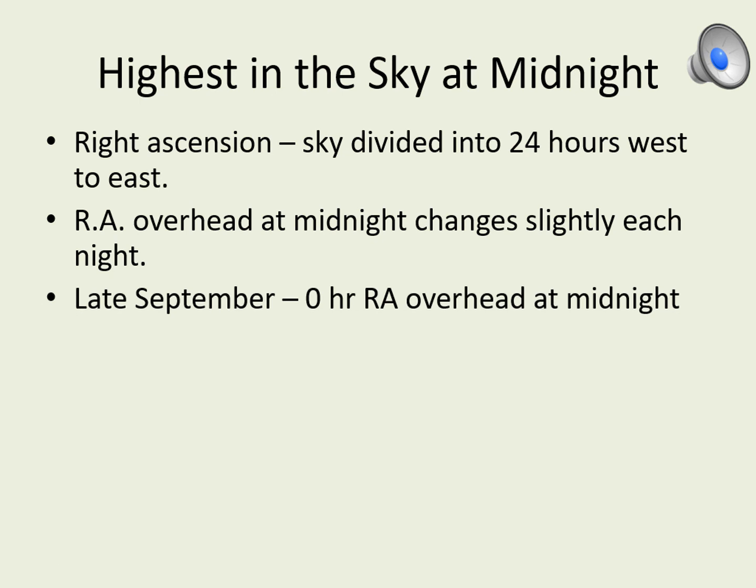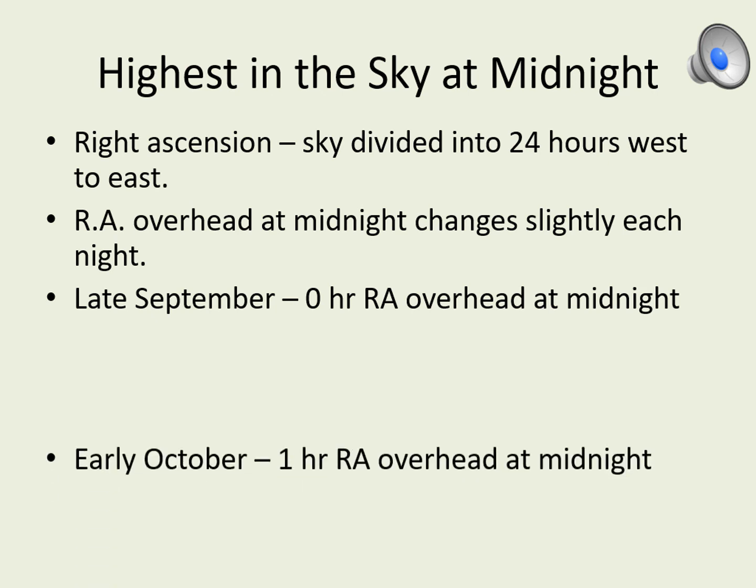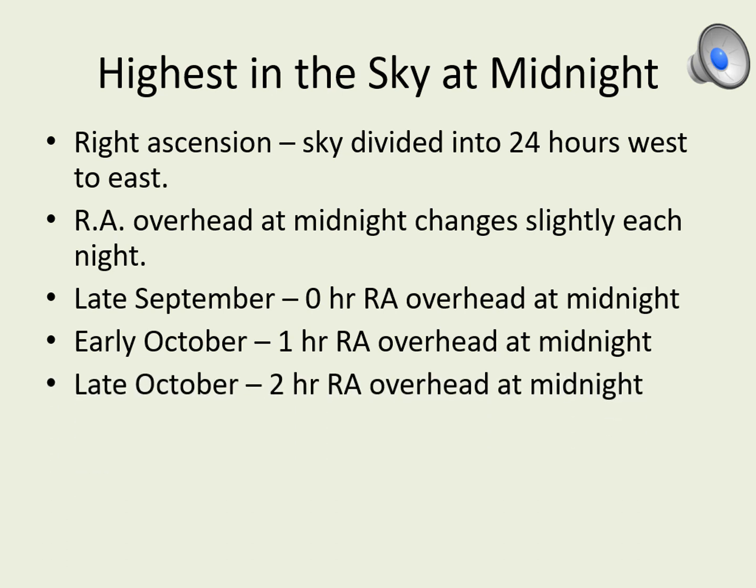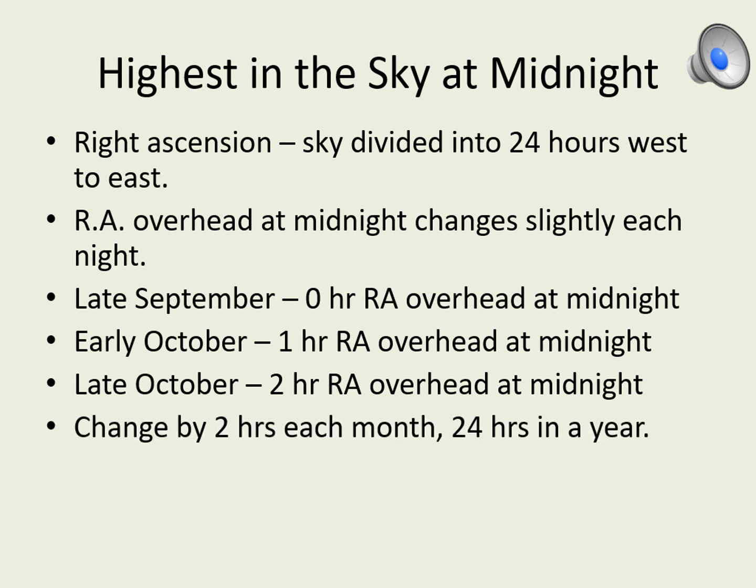In late September, if you look straight up at midnight, the stars you are looking at are at zero hours right ascension. A couple of weeks later in early October, one hour of right ascension will be overhead. In late October, two hours will be overhead. You can keep this up over the entire year, advancing by two hours each month. By early September of the following year, you'll see stars at 23 hours right ascension overhead, and by late September you'll be back to zero hours right ascension — the same thing as 24 hours.